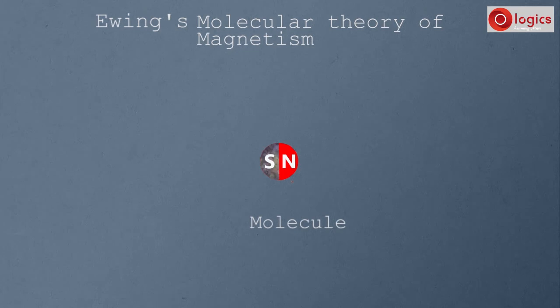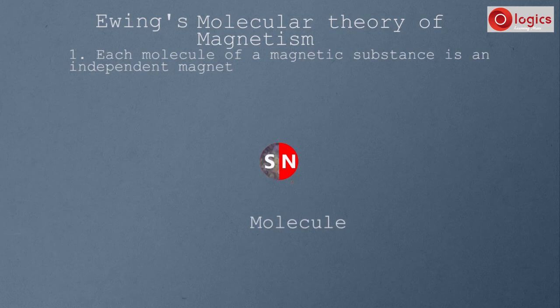The first point of this theory states that each molecule of a magnetic substance is an independent magnet.